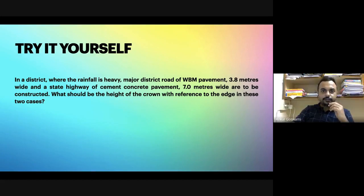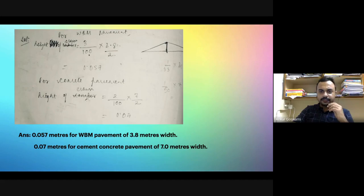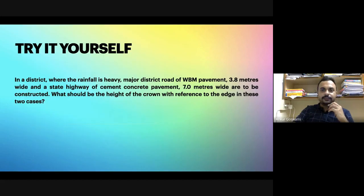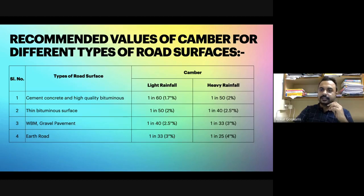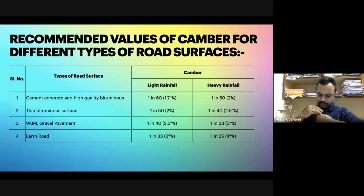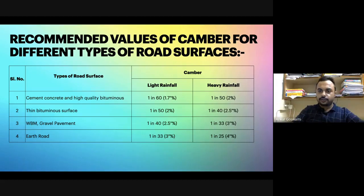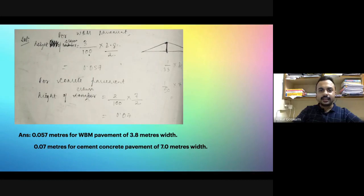This was the problem given to you in the previous video lecture. There is no specific formula for this problem. You have to check out for WBM pavement — how much camber is required to be provided. Similarly, for cement concrete pavement of seven meters, how much camber to be provided is given in this table. These kinds of tables are provided by the Indian Road Congress.